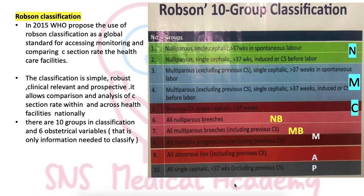Coming to the Robson classification: in 2015, WHO proposed the use of Robson classification as a global standard for assessing, monitoring, and comparing caesarean section rates in healthcare facilities. The classification is very simple, robust, clinically relevant, and prospective. It allows comparison and analysis of C-section rates within and across health facilities, nationally and internationally. There are 10 groups in the classification and six obstetrical variables — that is all the information needed to classify.